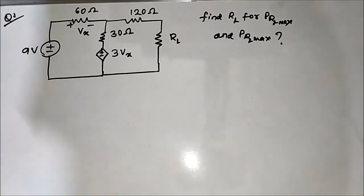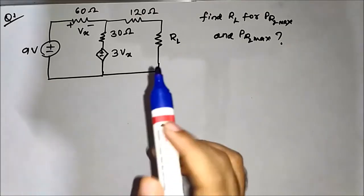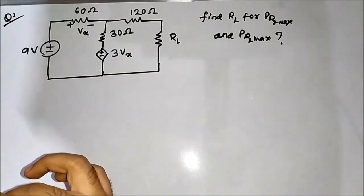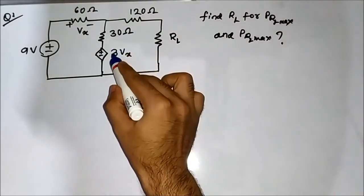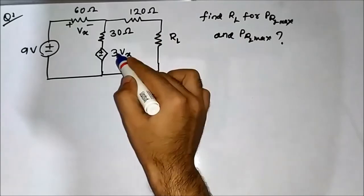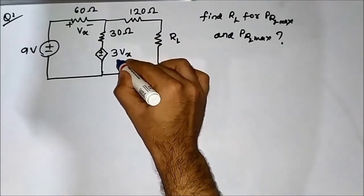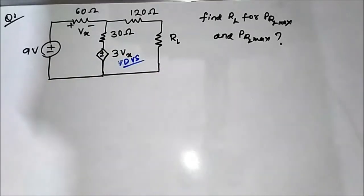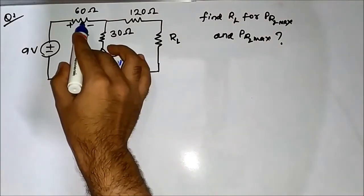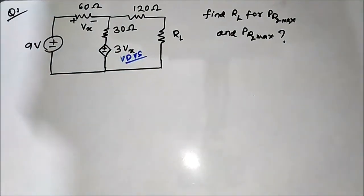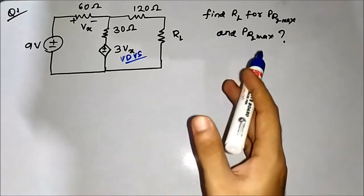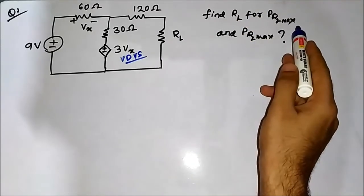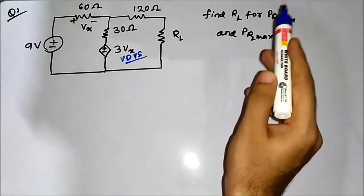This is the first question. The important thing to focus on here is the dependent voltage source, which is a voltage-dependent voltage source — 3VX — which is dependent on the voltage drop across the 60 ohm resistor. We have been asked to find the value of the load resistance such that maximum power will be transferred to the load, and the value of that maximum power.